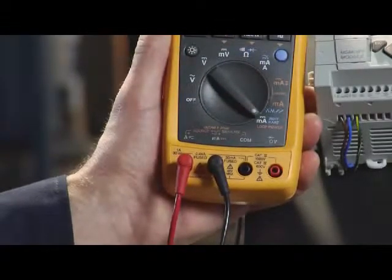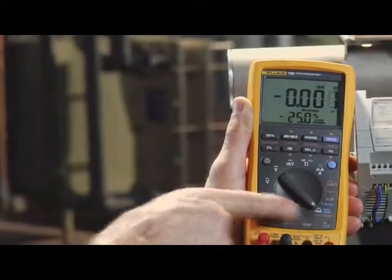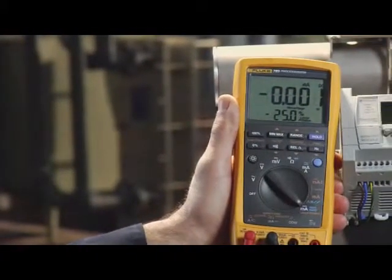The 789 also has a 24 volt loop power supply that will power a transmitter. You can simultaneously measure the milliamp signal drawn against the loop power supply.